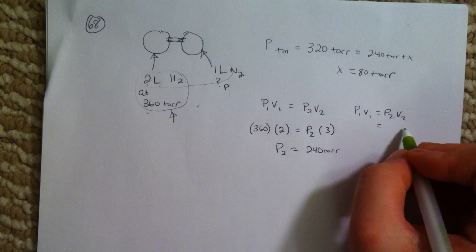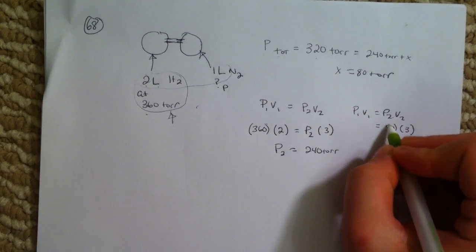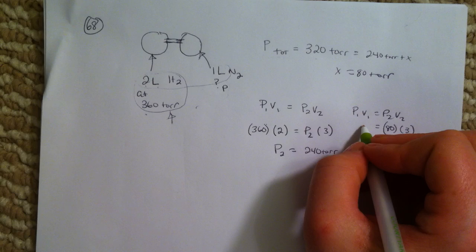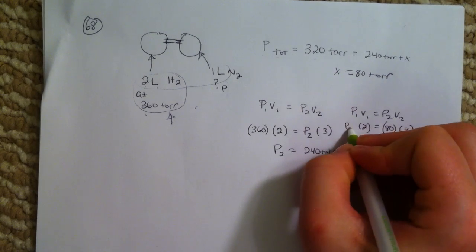We know V2 is 3 liters, P2 is 80, and V1 is 2 liters, and P1 we don't know.